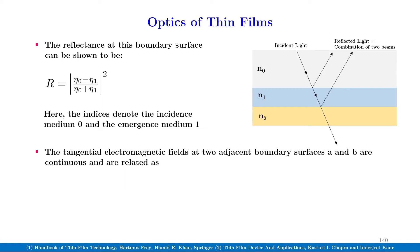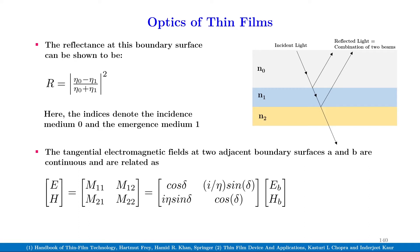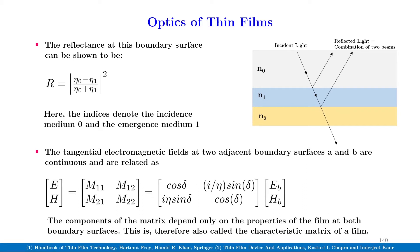The tangential electromagnetic fields at two adjacent boundary surfaces A and B are continuous and are related by the characteristic matrix: the matrix [E, H] equals the matrix [M11, M12; M21, M22], which equals [cos delta, i over eta sin delta; i eta sin delta, cos delta] multiplied by the matrix [EB, HB]. The components of the matrix depend only on the properties of the film at both boundary surfaces, and this is therefore also called the characteristic matrix of a film.